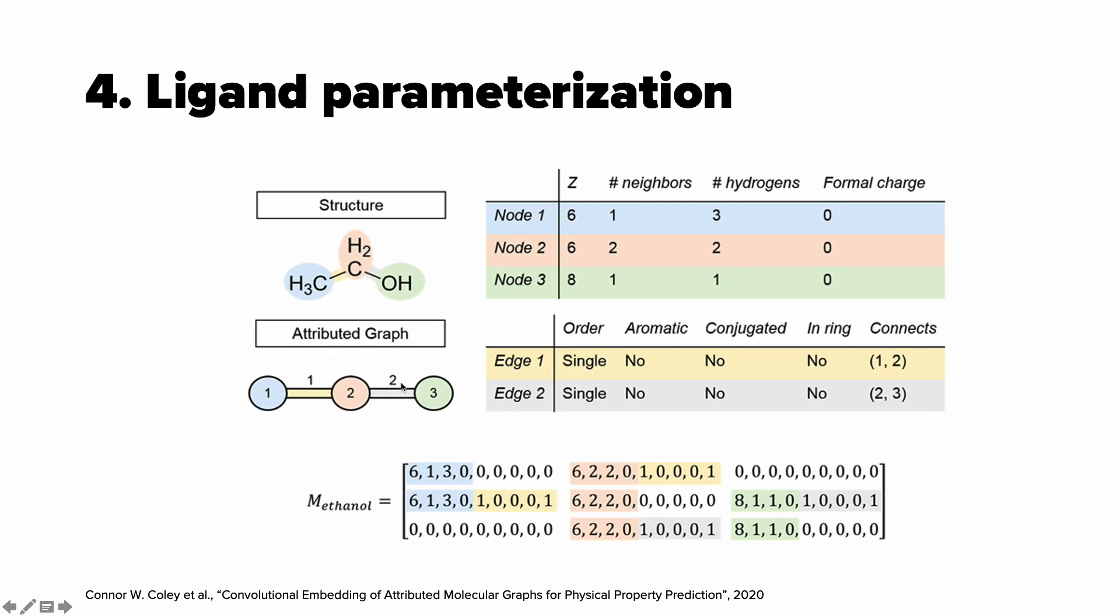Each bond is classified as aromatic, conjugated, whether it's part of a ring and to what atoms this bond connects. As a result, we have a matrix which represents all the bonds and all the atoms of a molecule.